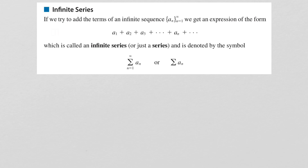If we add the terms of an infinite sequence, we get an expression which is called an infinite series, or just a series for short. It is denoted by the symbol sigma n equals 1 to infinity of a_n. This symbolizes trying to add up infinitely many numbers. So first we must ask the question: when does it make sense to do this?